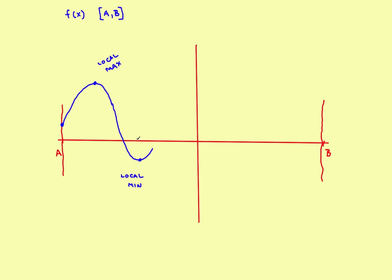Wherever you have a maximum value, draw a tangent line to that point — it'll be horizontal. The derivative gives you the slope of the tangent line, and at a maximum you'll have a horizontal tangent, which means the first derivative will be equal to zero. You'll have exactly the same thing at local minimums — the first derivative equals zero. So if you have a local maximum or minimum, you can identify it because the first derivative is equal to zero.